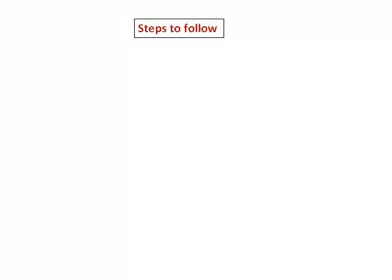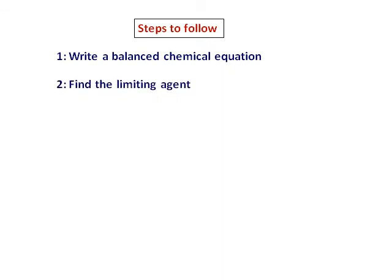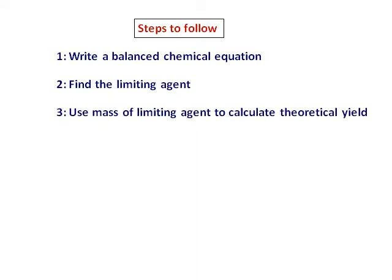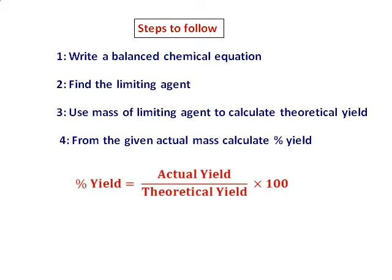Let's now lay out the proper steps to calculate the limiting agent. Step one: write a balanced chemical equation. Step two: find the limiting agent. Step three: use the mass of the limiting agent to calculate the theoretical yield. Step four: from the given actual mass, calculate the percentage yield using the formula. For any question given to you, follow these steps and you will be able to handle it well.